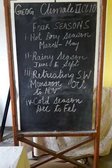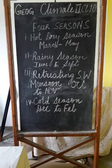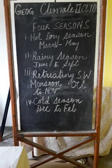The Arabian Sea branch gives heavy rainfall into the interior of the country. The Bay of Bengal branch enters the northeast of the country and takes a left-hand swing due to the extension of the Himalayas, giving heavy rainfall in that area. This includes Mawsynram, which receives the heaviest rainfall in the world.